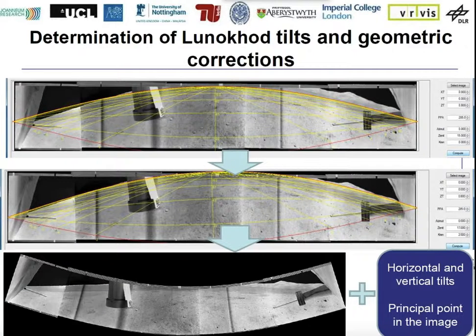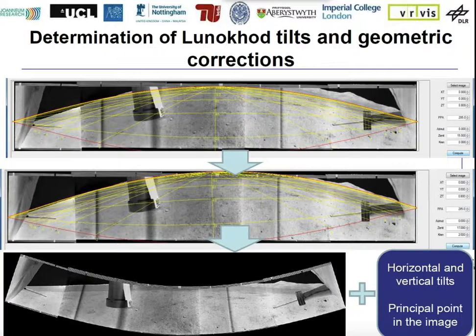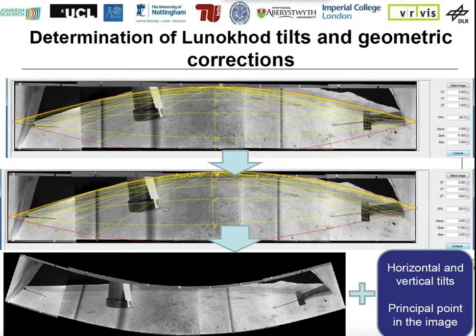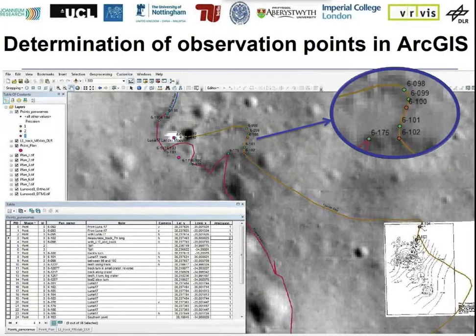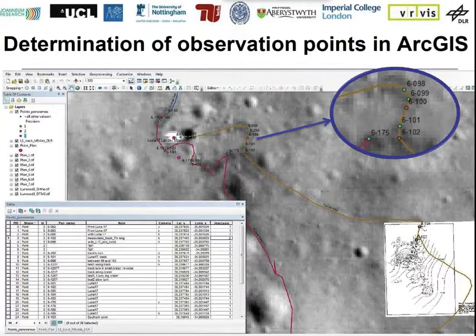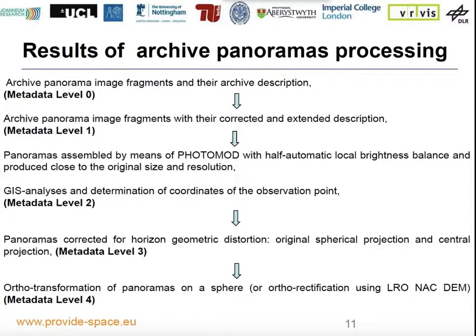Here you can see another model that was developed for the description of exterior orientation data. During the mission they may have had this information, but we have not found it. So we tried, using this software, to receive the necessary tools and use them for correction of panorama images. For determination of observation points, we used ArcGIS tools, recognized the Lunokhod road on LRO images, and also integrated some old maps for this area.